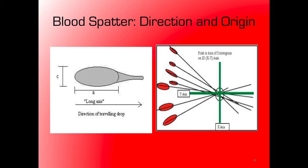We can also run a calculation to figure out where above the ground — in a third dimension — the bloodletting occurred. Did it happen a foot off the floor or six feet off the floor? That makes a huge difference: someone lying in a defensive posture versus someone with an arm raised over their head can all be determined from blood spatter calculations.